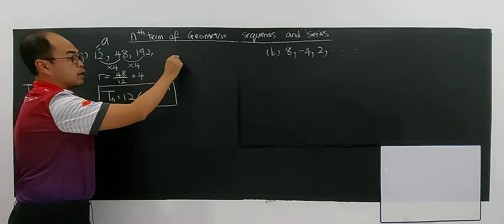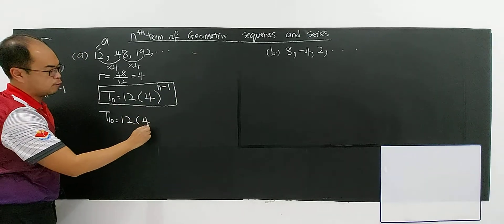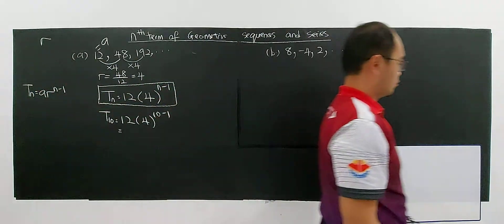So if you don't want, you can apply this formula. 12 times 4 power of 10 minus 1, and you will get the required value.